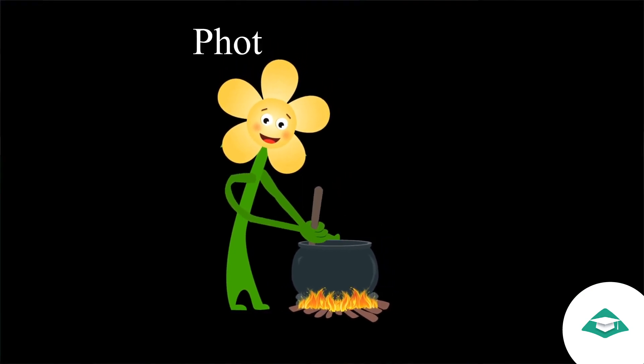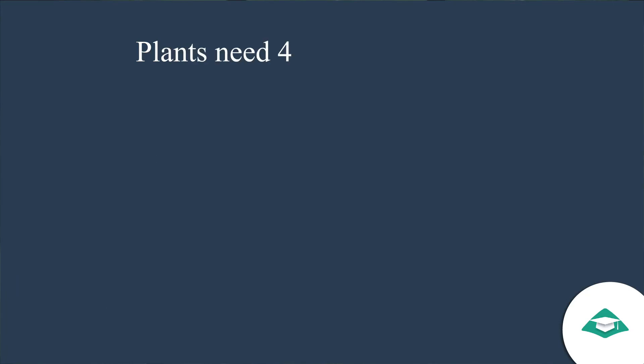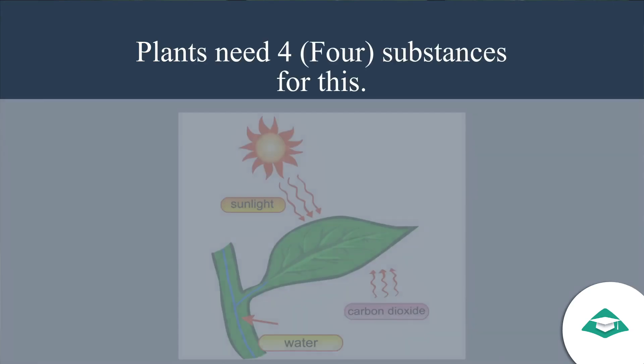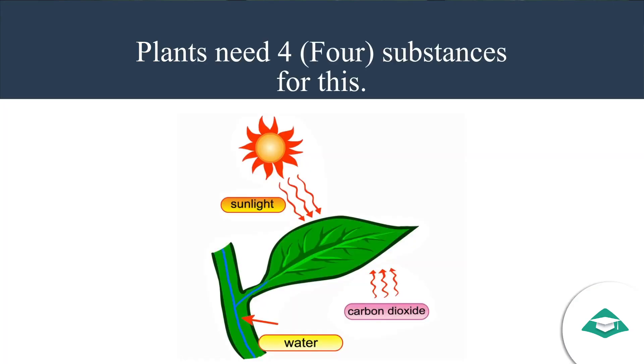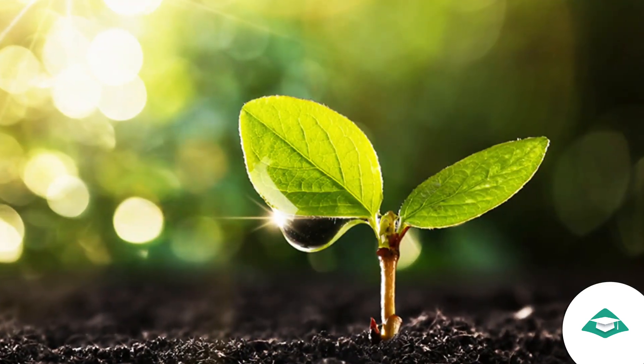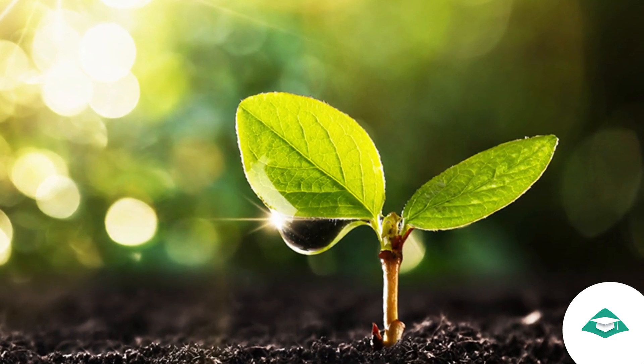Plants need four substances for photosynthesis: sunlight, water, carbon dioxide, and chlorophyll. Photosynthesis is carried out by leaves.